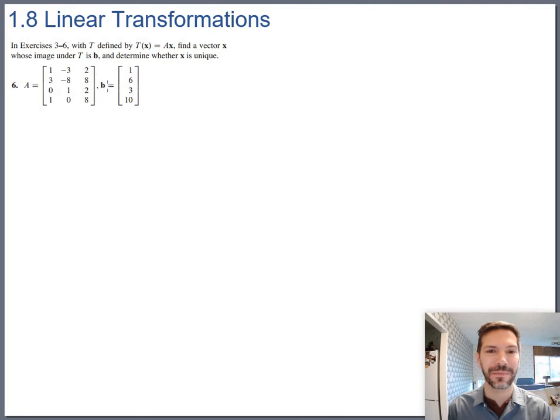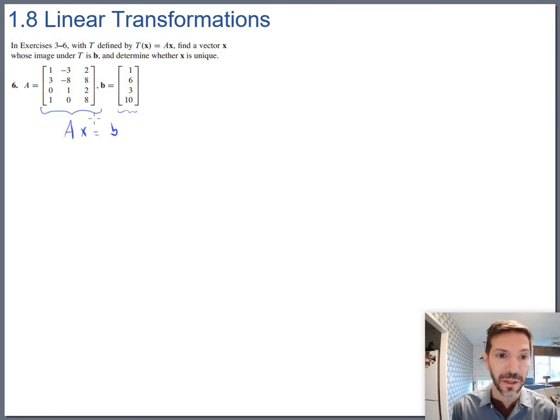The instructions say T is defined by a transformation of x which means A times x. Find the vector x whose image under T is b, which is probably new language but they're just saying b is going to be the output under this transformation. X is going to be three-dimensional; it's going to tell us how to combine the three columns of A to produce b if that's possible.